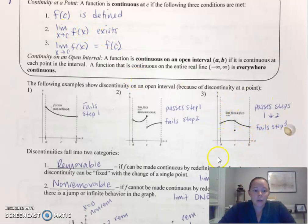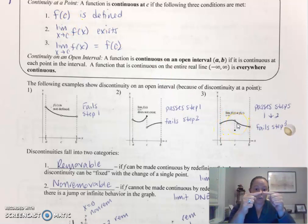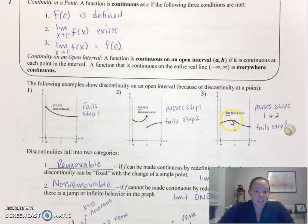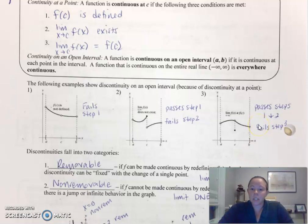The last visual here passes the first two steps. The function is defined, the limit exists. As you approach from the left and the right, your fingers would be coming together — you're approaching the same y value — but you can obviously see you'd have to lift your pencil, and there's where it fails the last step. The limit does not equal the function value. So any time you have to say that something is continuous at a point, you need to make sure it meets these three requirements.